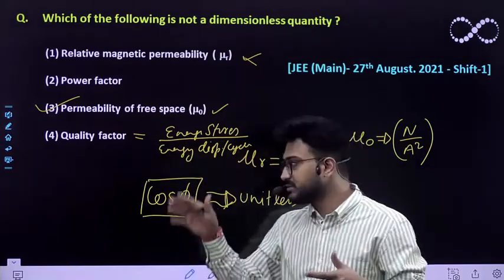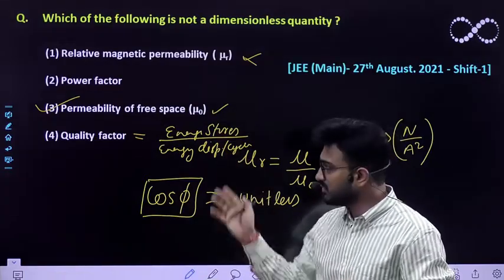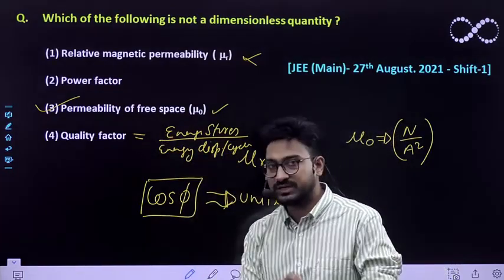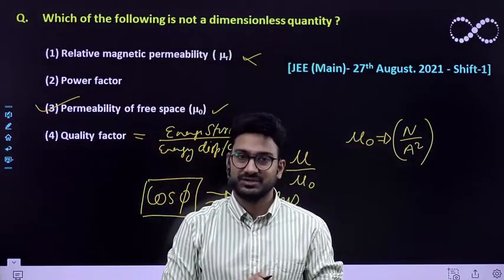Energy dissipated per unit cycle. How much energy has been dissipated per cycle is called as quality factor. Again it is ratio of the energy so it would be dimensionless. So the third would be the correct option. So I hope this question is clear to everyone. Thank you.